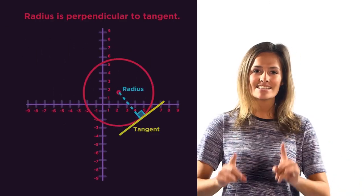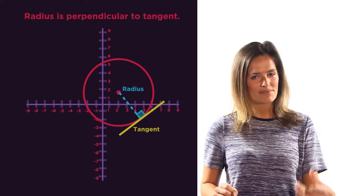The tangent is always perpendicular to the radius. This is a key piece of information for finding the equation of a tangent.